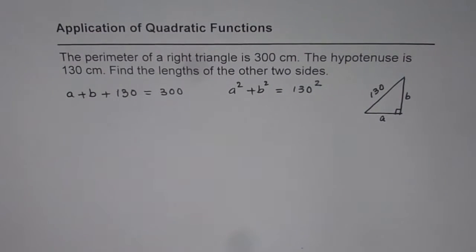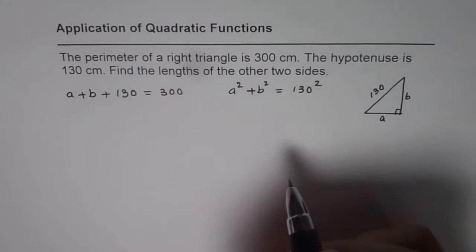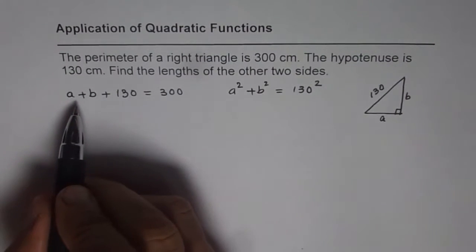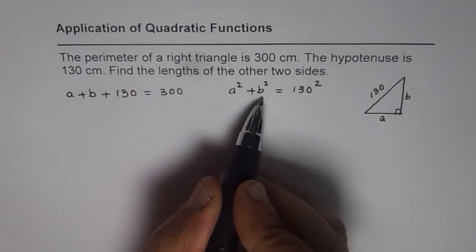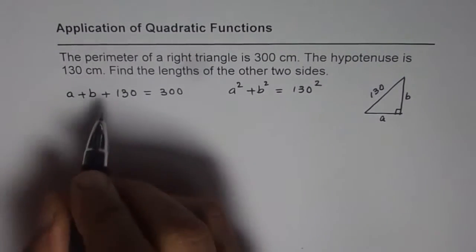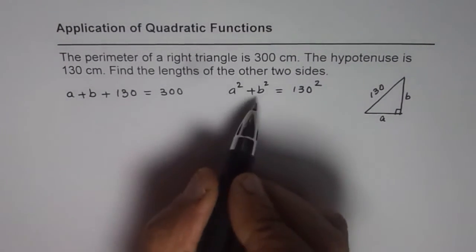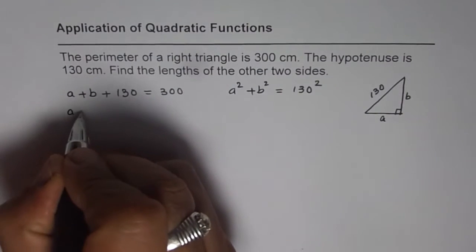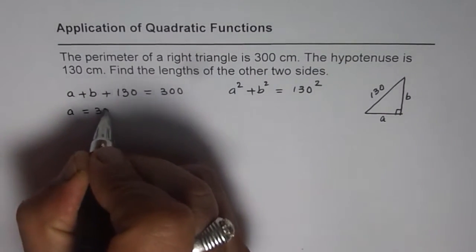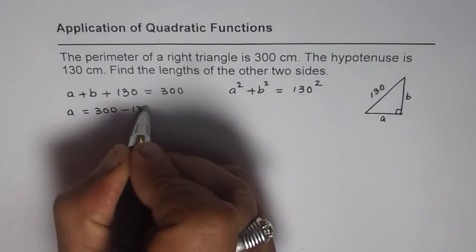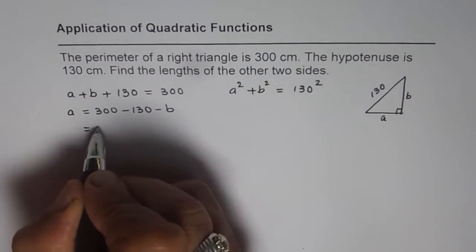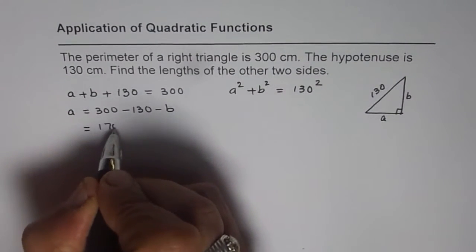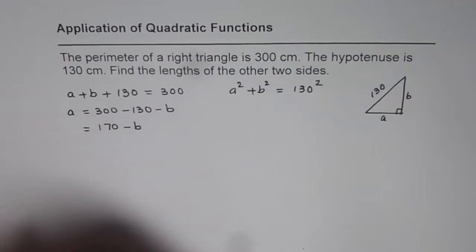So these are the two relations. There are two variables A and B which we can always find. From the perimeter equation we can write A in terms of B: A equals 300 minus 130 minus B, which is 170 minus B.